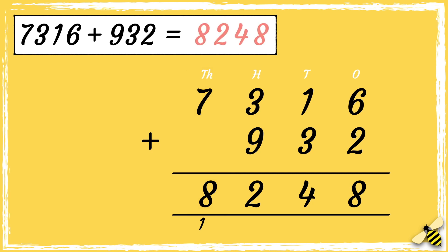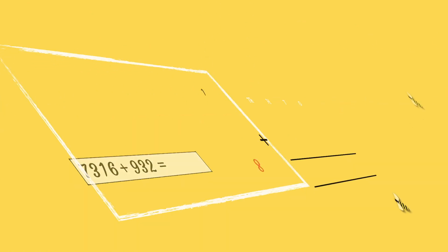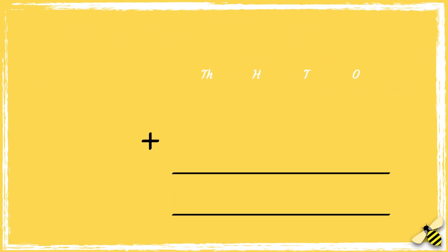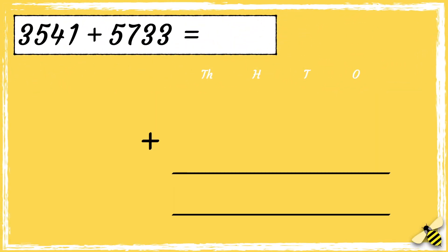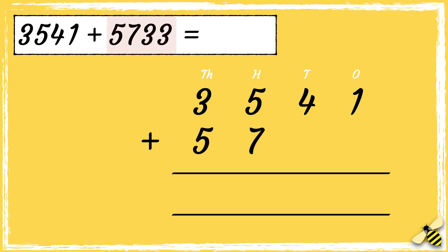The answer is eight thousand two hundred and forty eight. Let's have a look at one more: three thousand five hundred and forty one add five thousand seven hundred and thirty three. We have three thousands, five hundreds, four tens, and one one. Then we have five thousands, seven hundreds, three tens, and three ones.